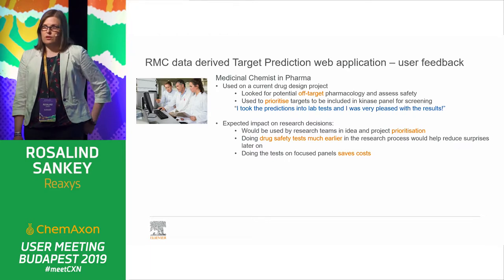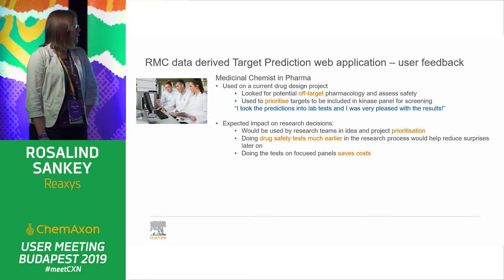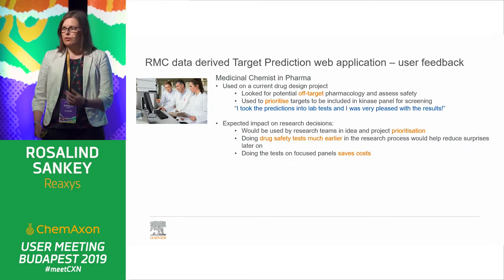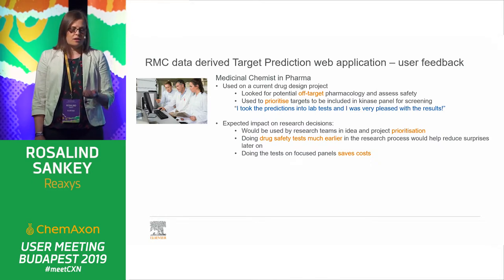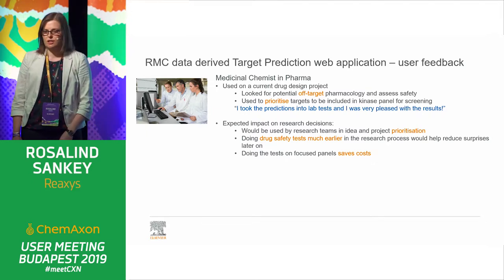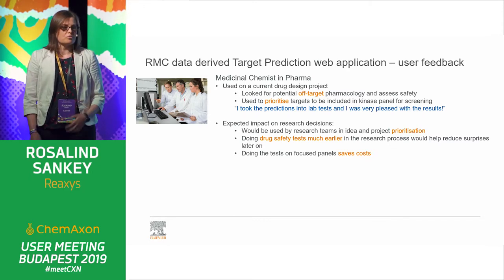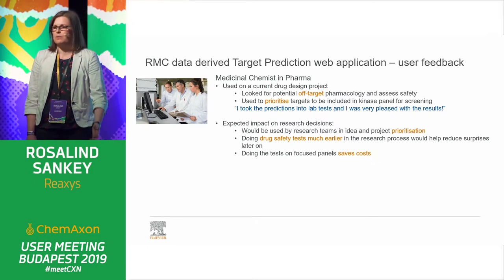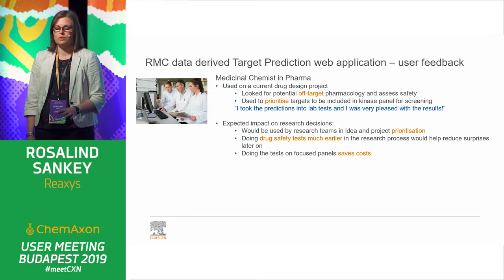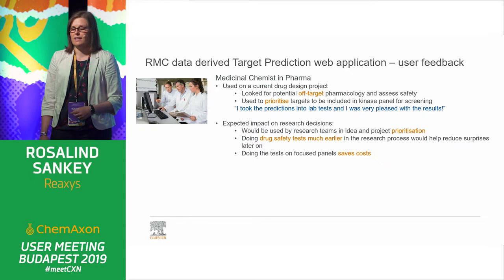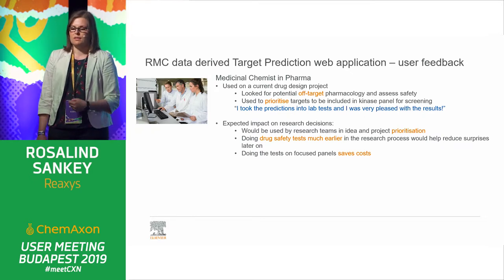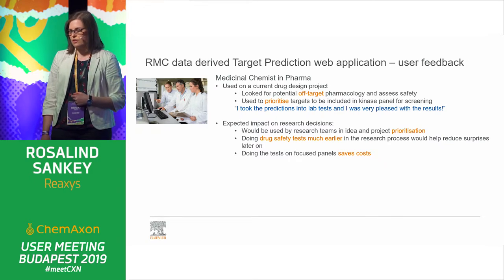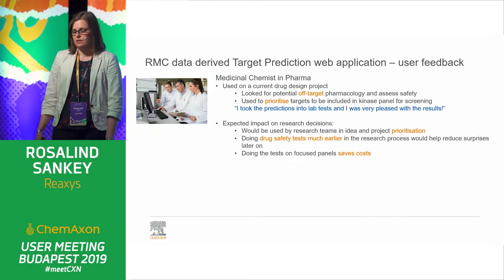Once we handed these applications over to our customers to test, the feedback really did reinforce what we were trying to do. Many of them used it for testing off-target pharmacology and looking for unexpected things. Particularly, one customer had some golden feedback — he actually used the predictions to adapt his kinase panel and prioritized different proteins for that. When they actually tested it, he was very pleased with the results, because the prediction pulled up a target he had not envisaged being a problem, he put that into his kinase panel, and it confirmed it was hitting that target. This is really about bringing that knowledge much earlier on in discovery.